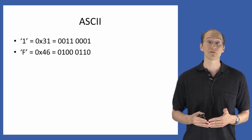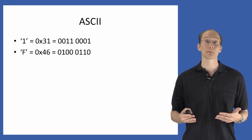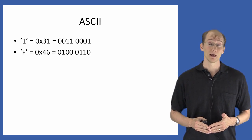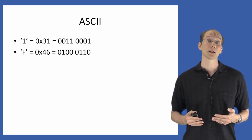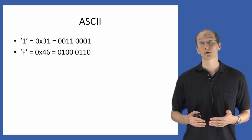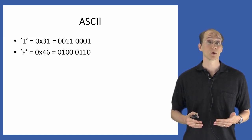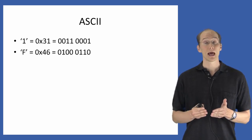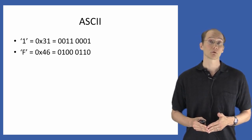And similarly, if we're representing the character capital F, the character capital F corresponds in the ASCII representation to the value hex 46, which corresponds to the sequence of eight bits, 01000110. And so the character F in a file would ultimately be represented in your computer as the sequence of eight bits described here.